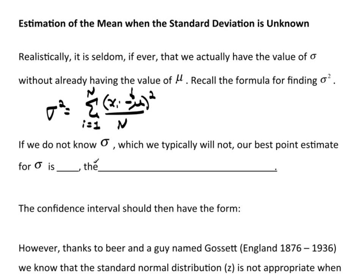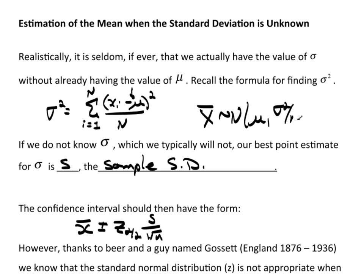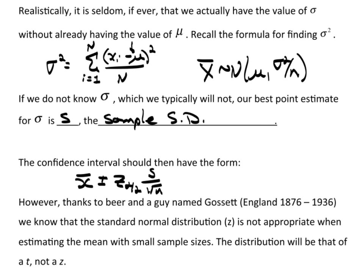If we don't know sigma, which is typically the case, our best point estimate for sigma is s, the sample standard deviation. We would think the confidence interval would then have the form x-bar plus or minus z of alpha over 2. I don't know sigma, so I will use s over the square root of n. Remember, under the right conditions, x-bar is distributed normal with a mean of mu and variance of sigma squared over n. I don't have sigma, so I'm simply substituting in s, my best estimate for sigma. But this is actually not true.